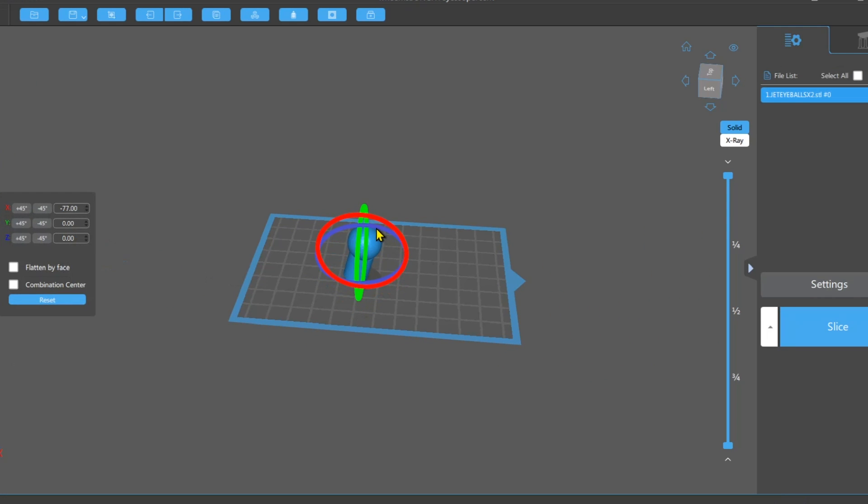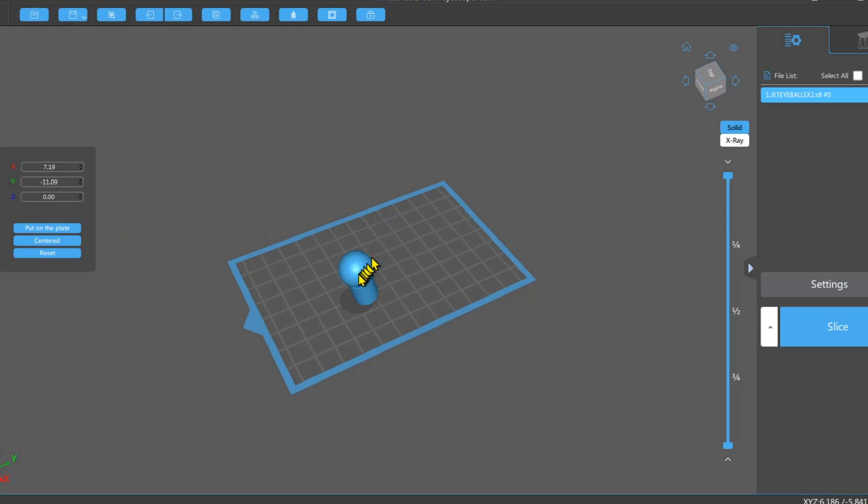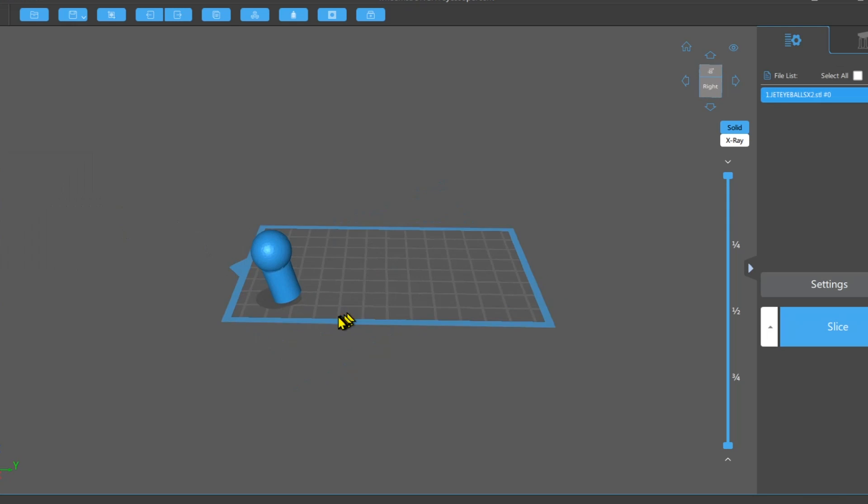Your printer might be different. Your setup might not need it to be reduced, but I'm finding that I need to reduce these lenses by five percent. So I'm going to angle it out a little bit. I've got it angled, as you can see.